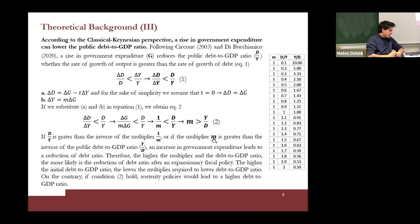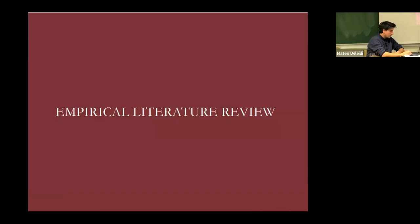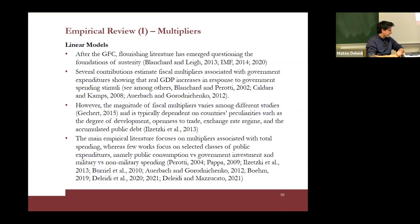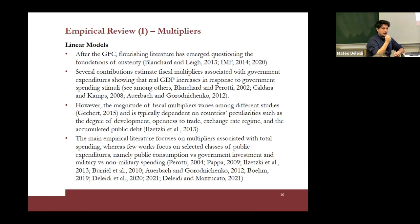The higher the multiplier and the debt-to-GDP ratio, the more likely is the reduction of the debt ratio after expansionary fiscal policies. On the contrary, if that condition does not hold, austerity policy would result in an increase in the level of the debt-to-GDP ratio.